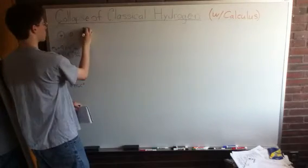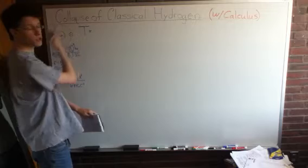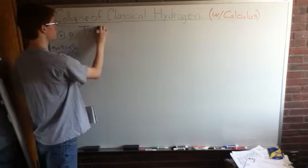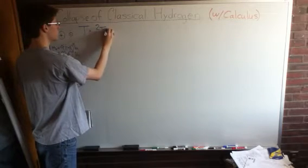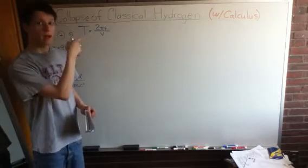So, one orbit, which will be the electron's period, we'll call it t, is going to be equal to the distance it travels, which, because it's a circle, it's going to be 2 pi r, divided by its velocity, which is going to be v. Problem. We don't have the velocity.